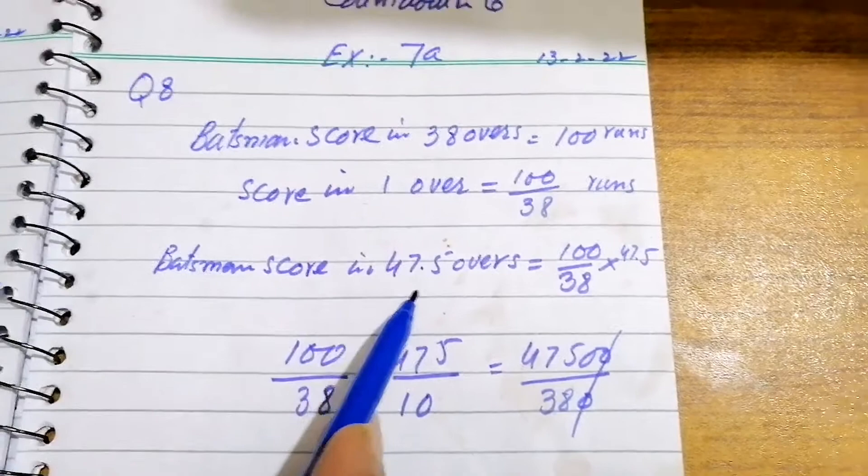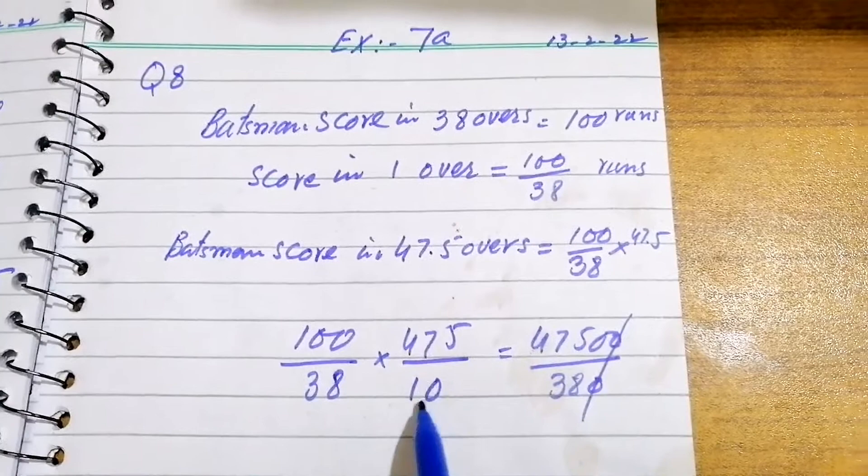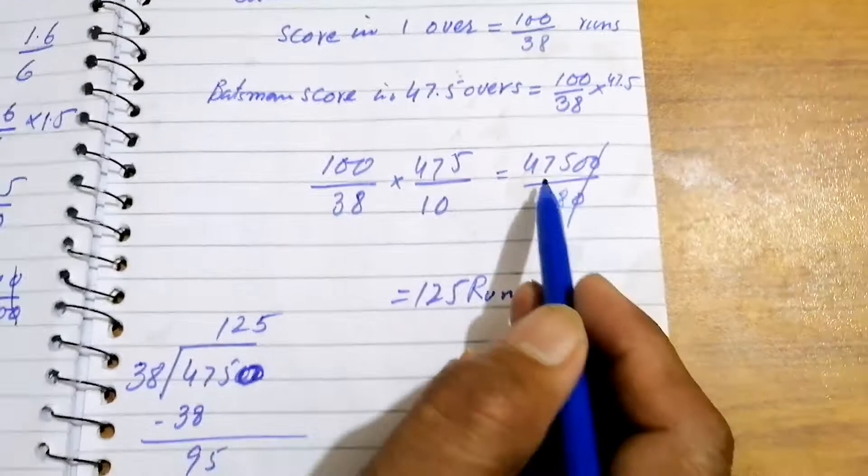Removing the decimal, we get 10 here and then further, we cancel the numbers. 50 over 38, we divide it and we get 125 runs.